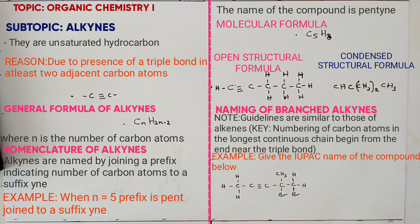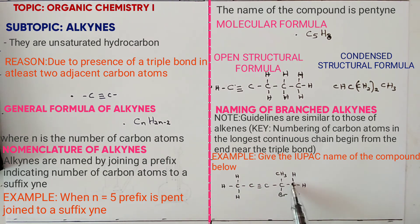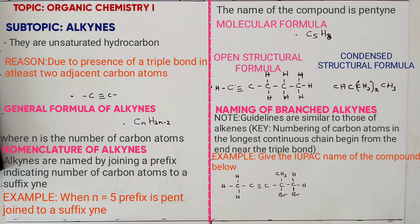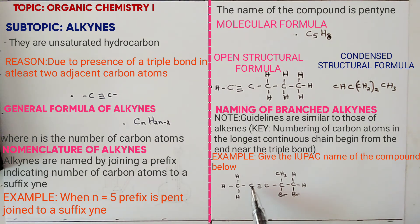For example, you are told to give the IUPAC name for a given compound. Step 1: identify the longest continuous carbon chain, which is 1, 2, 3, 4, 5 — so 5 carbons, and the prefix is 'pent-'. Step 2: number the carbon atoms from the end nearest the triple bond. Beginning from the left, the triple bond falls on carbons 2 and 3.